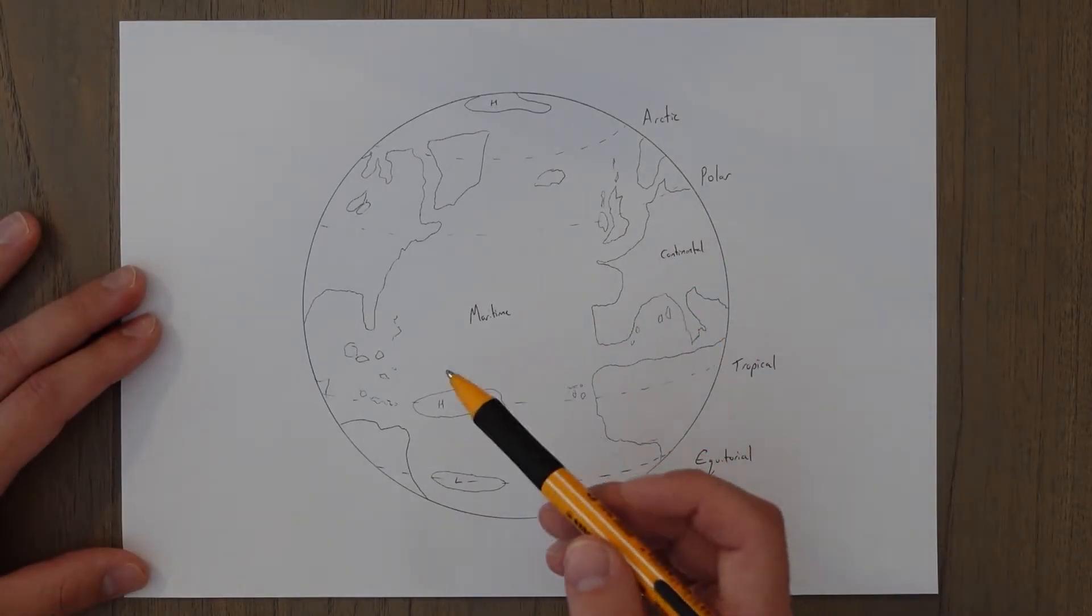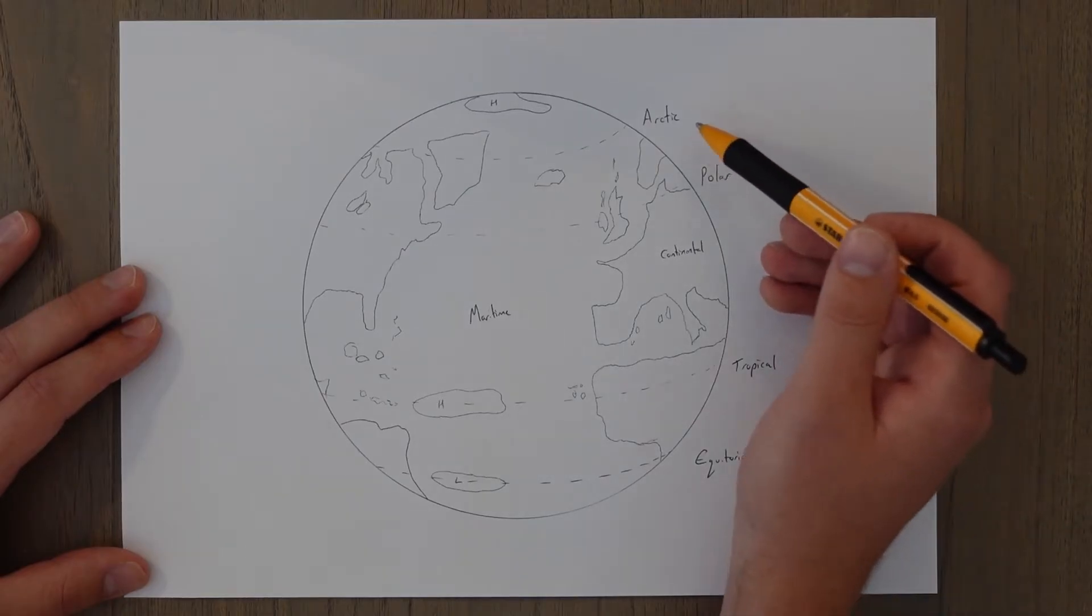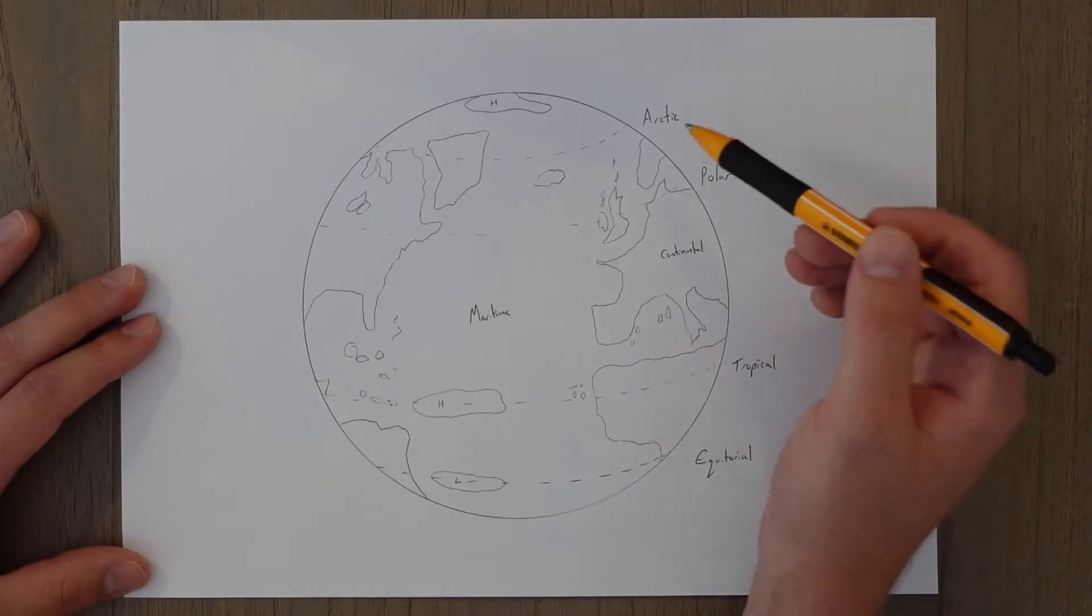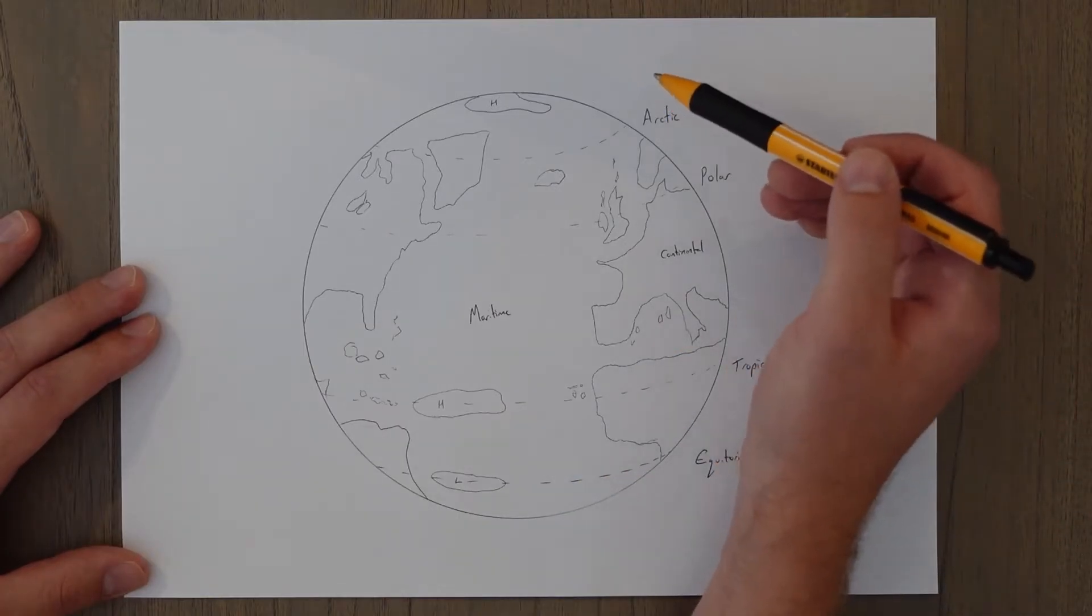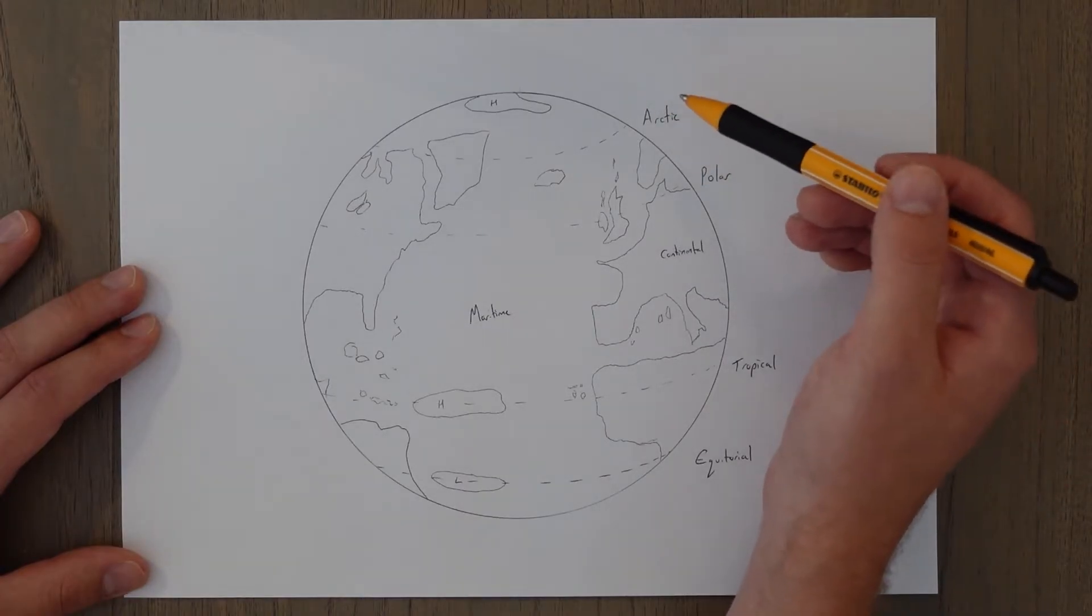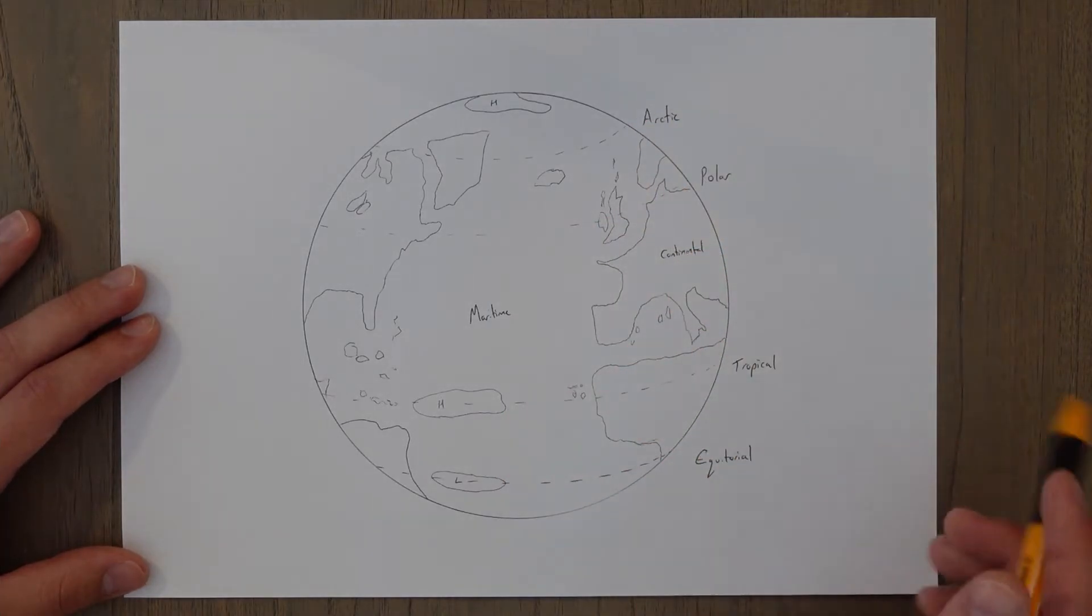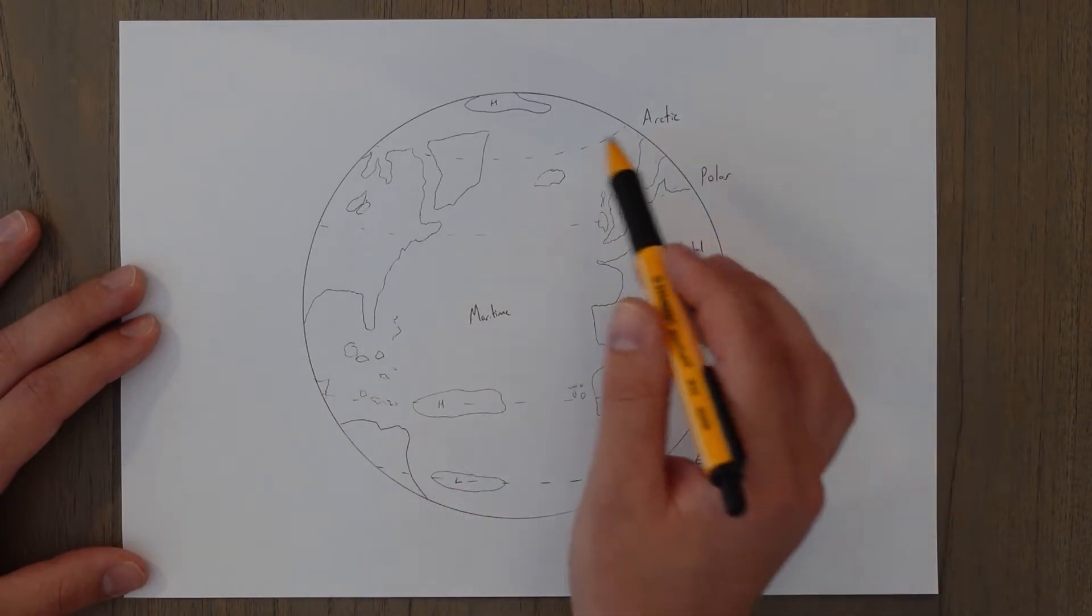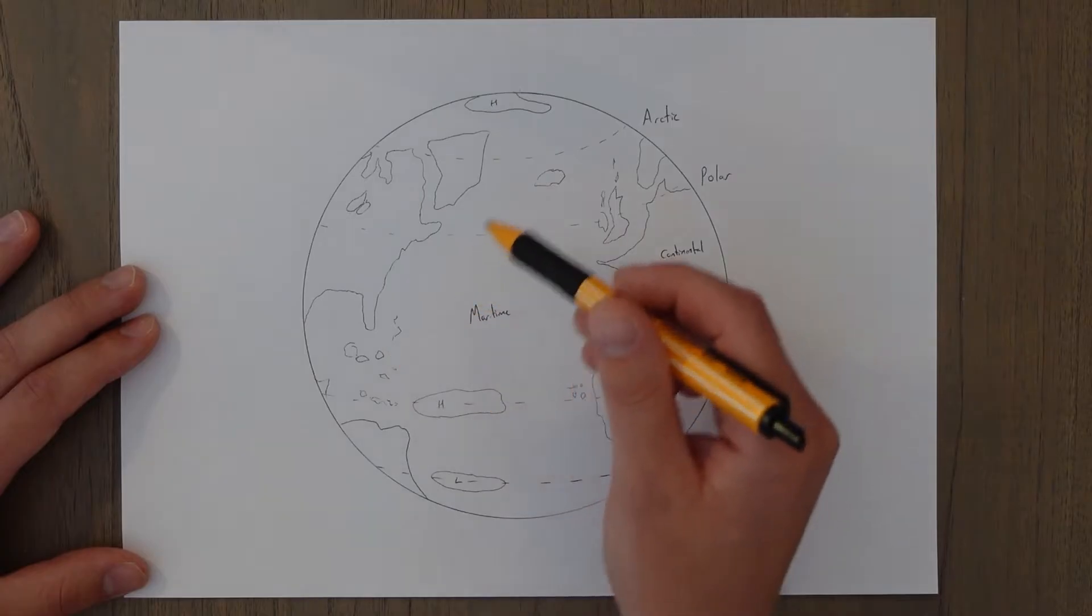The locations we have are equatorial, tropical, polar and Arctic. Arctic slash Antarctic, if you're in the Southern Hemisphere. And Arctic kind of confusingly is closer to the poles than polar air. You'd think it'd be the other way around, but Arctic, polar is just cold. Arctic would be very, very cold. And then, as you say, we've got maritime and continental. So the air masses that affect and bring air with them will be a combination of these.